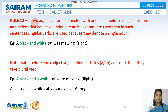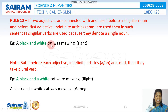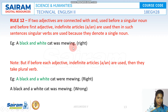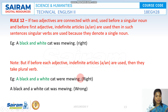Rule number 12: If two adjectives are connected by 'and' with only one article before them, then the two adjectives refer to only one person, object, or animal. For example: 'A black and white cat was here' — meaning one cat with both black and white patches. But if there are two different articles before the adjectives, such as 'a black and a white cat,' then it means two different animals, so you would use 'were.'